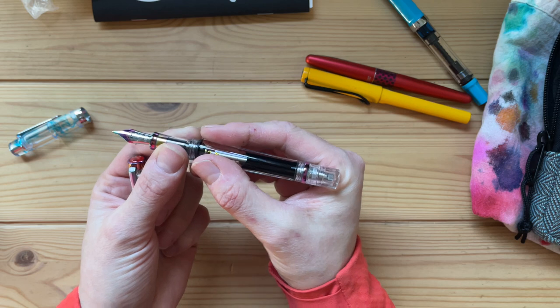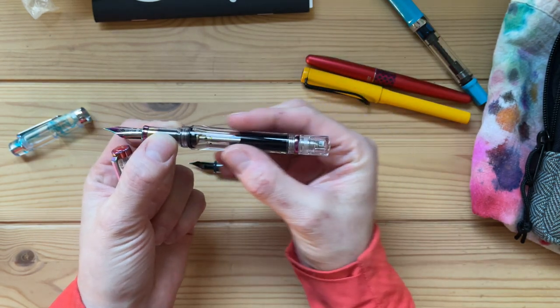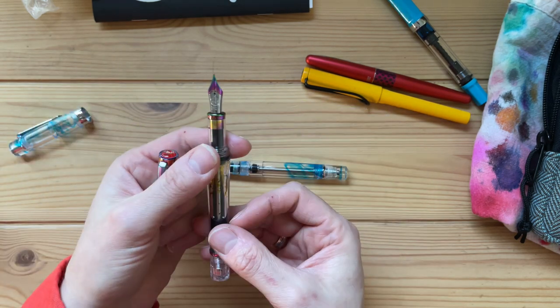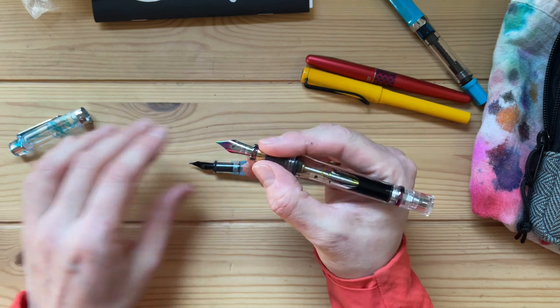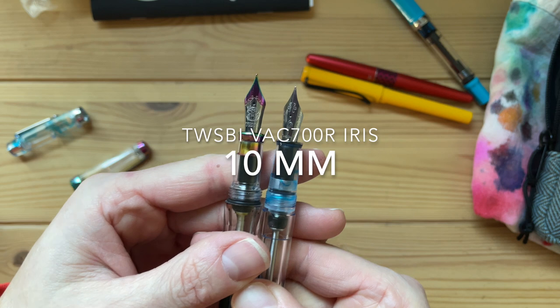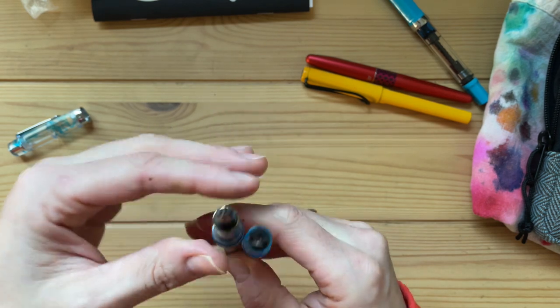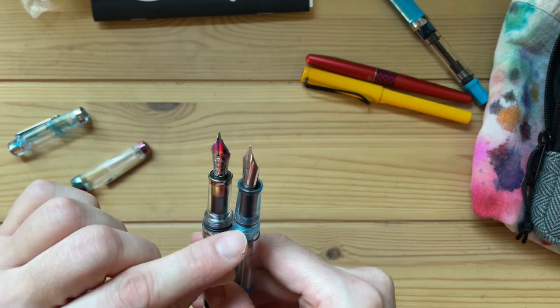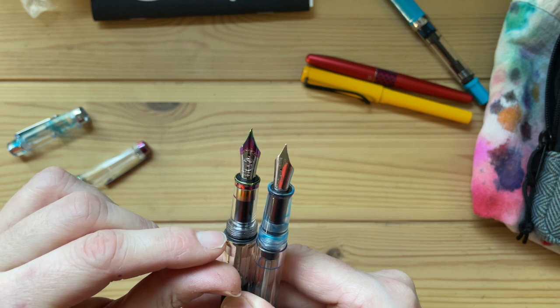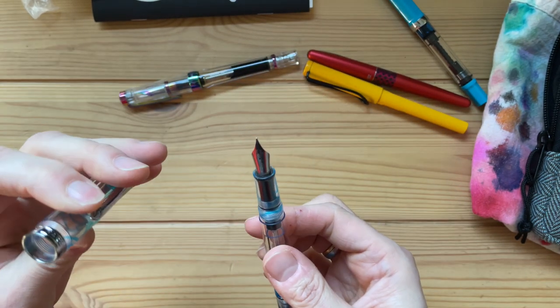The TWSBI does have some more... The cap has the diamond shape that usually you will find on the Diamond 580. It's faceted so that it reflects light differently. The pen shape is straight on the outside, but on the inside, it looks like it isn't. And then the nib, the section on the VAC 700R seems to be a tiny bit smaller, narrower, or almost the same.